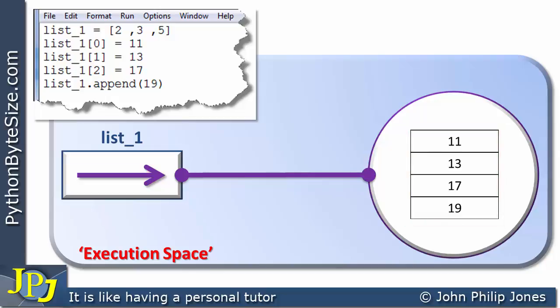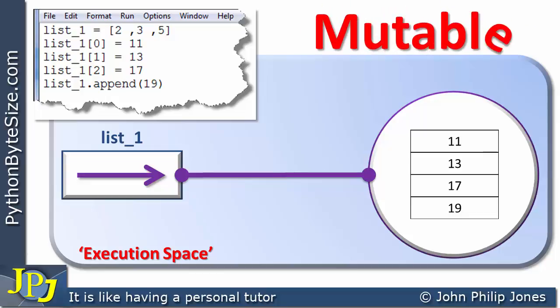What this program has shown is that we started off with list_one containing two, three, and five. Then we changed the two, three, and five to 11, 13, and 17 respectively. And then we added an additional element containing 19. This shows us that a list is an example of a mutable type in Python, meaning its values can be altered, as you've seen in this example.